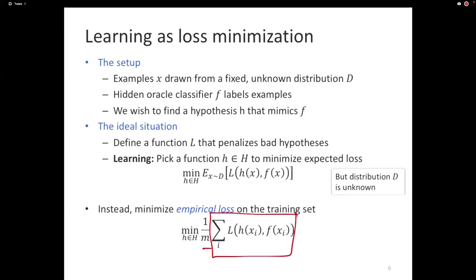We don't have access to the distribution, but we can keep sampling from that distribution. We have the ability to keep asking for examples from that distribution. So we construct a training set. And once you have a training set, you can calculate the average loss. It's typically not called the average loss, it's called the empirical loss. It's just an empirical estimate of the expected loss. And you minimize that.